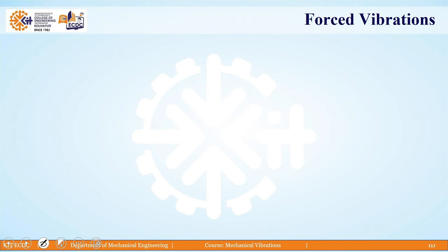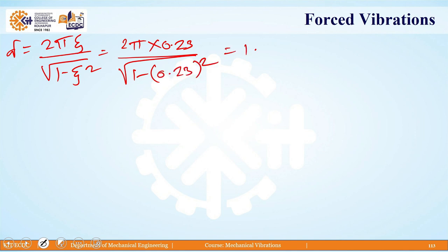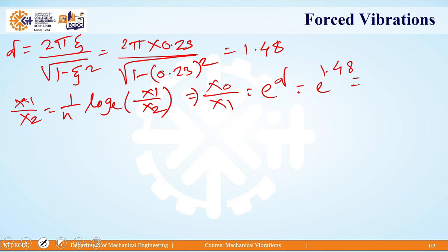The logarithmic decrement delta is given by 2*pi*zeta divided by sqrt(1 minus zeta^2). Substituting: 2*pi*0.23 divided by sqrt(1 minus 0.23^2) equals 1.48. To get the ratio of successive amplitudes, x1/x2 equals e raised to delta. So e^1.48 gives approximately 4.39.